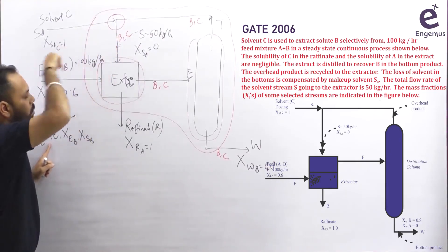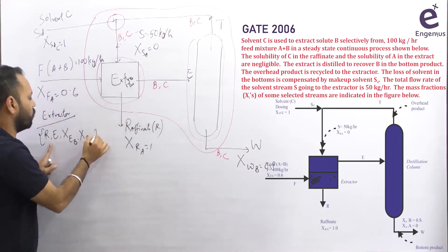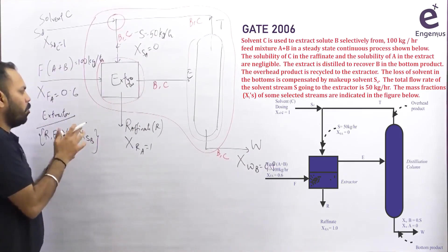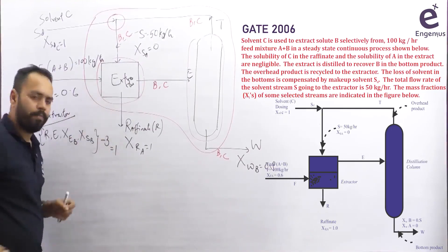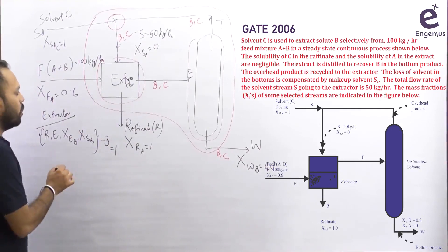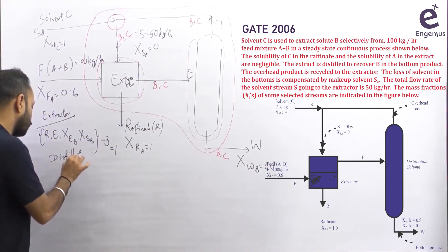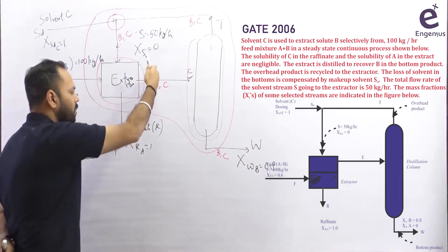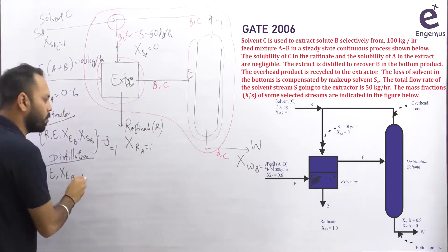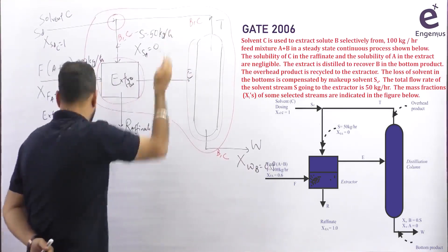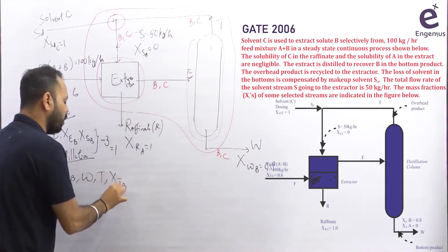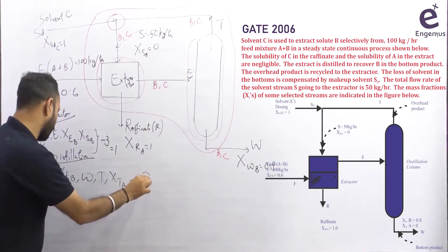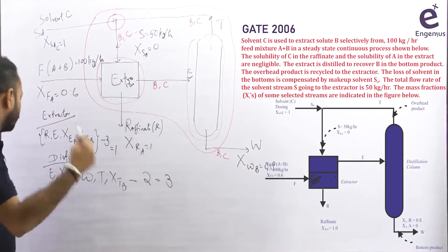Four unknowns for the extractor. How many equations? Streams crossing the boundary contain species A, B, and C — three species, so three equations. Four minus three gives degree of freedom equal to one. Cannot start with the extractor. For the distillation column: E, X_EB, W, T, and X_TB are all unknown — five unknowns, two species, two equations. Degree of freedom equals three — cannot start here either.